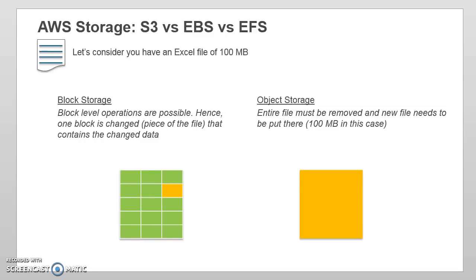Hello guys, welcome to Knowledge India. In this tutorial we are going to talk about different storage options available on AWS. As you can see, we have three things: S3, EBS, and EFS. S3 stands for Simple Storage Service, EBS is Elastic Block Store, and EFS — which came about a year and a half back — is Elastic File System.